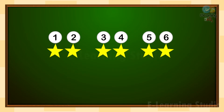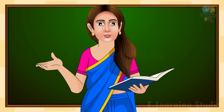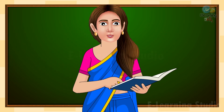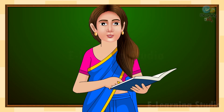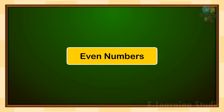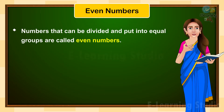So we can say that these stars are in even form. If some stars are left over, then those stars are in odd form. Kids, this was a picture method to understand the even and odd concept.